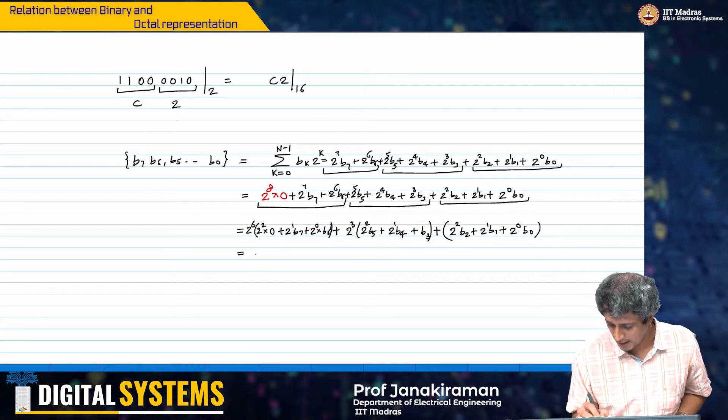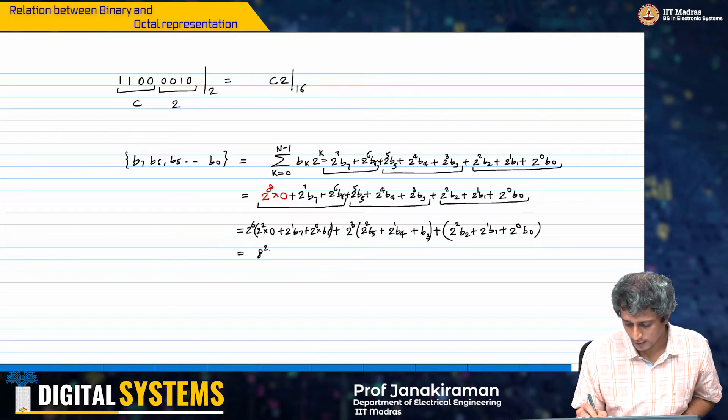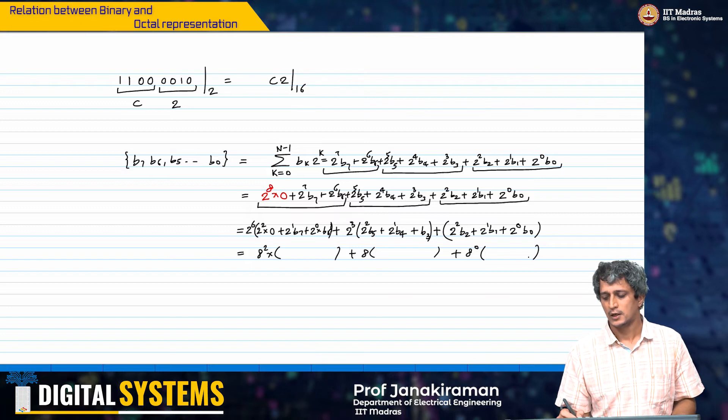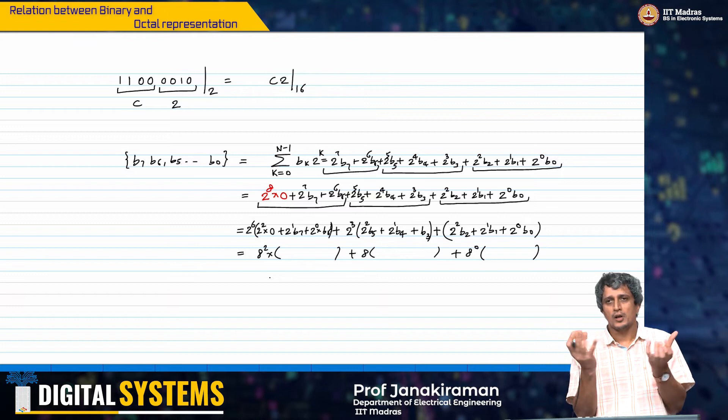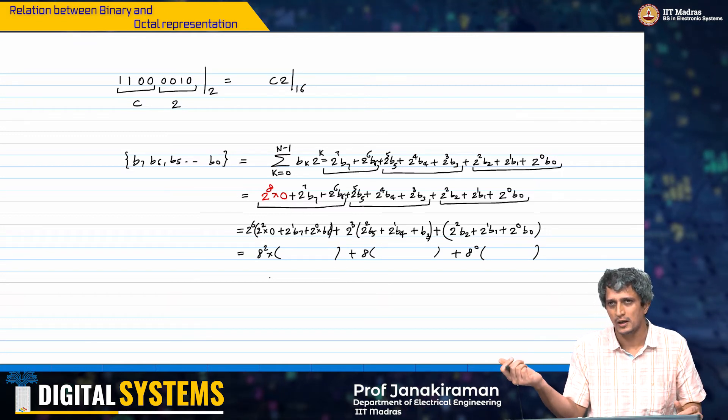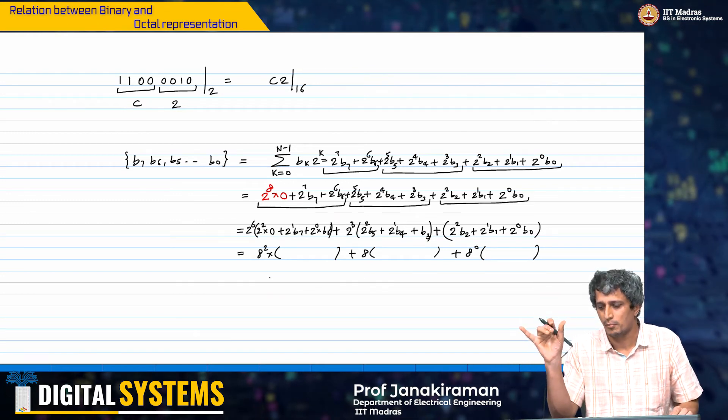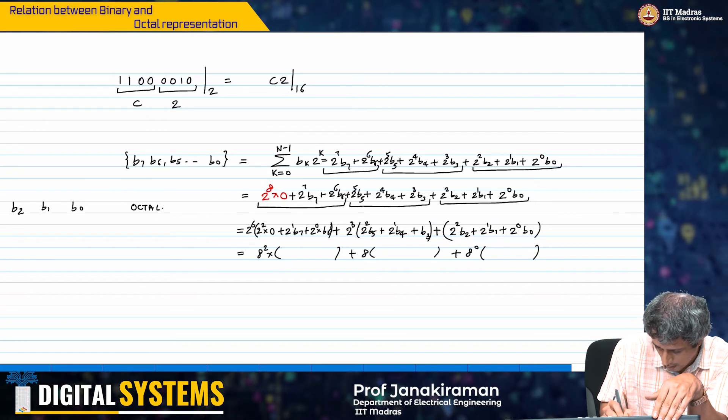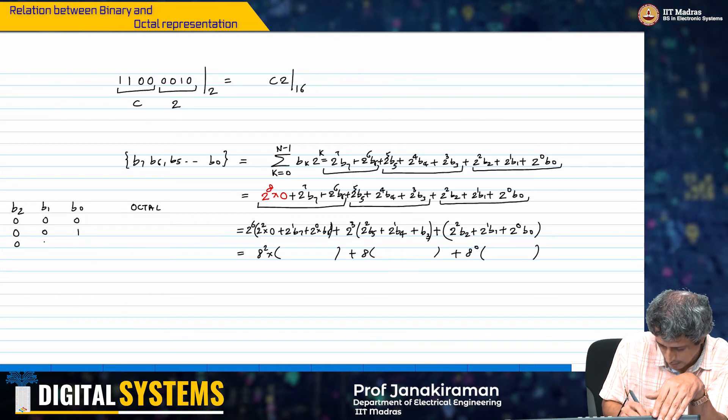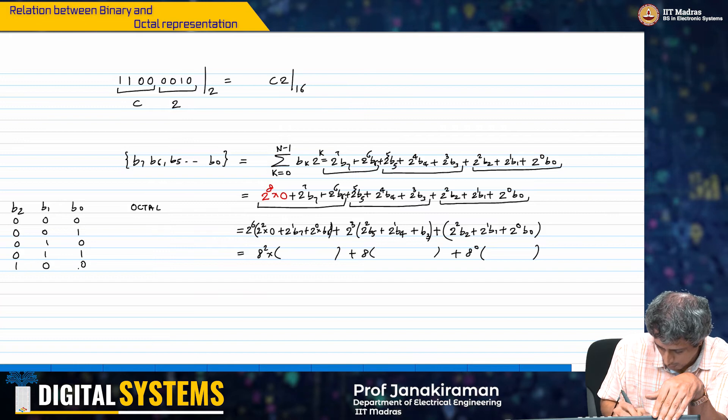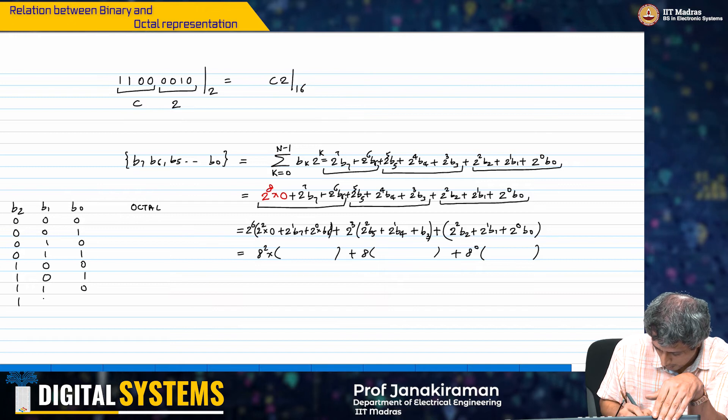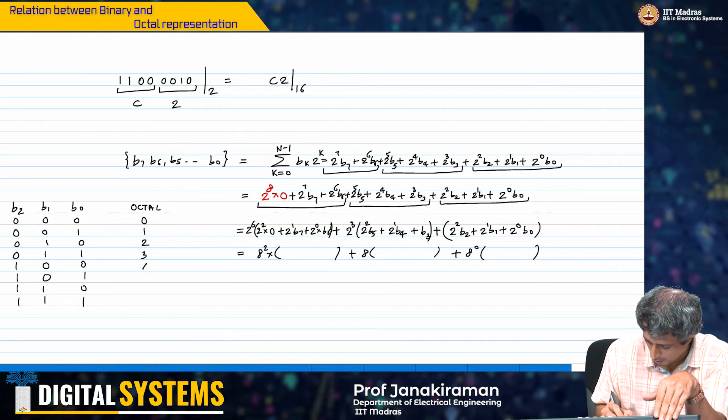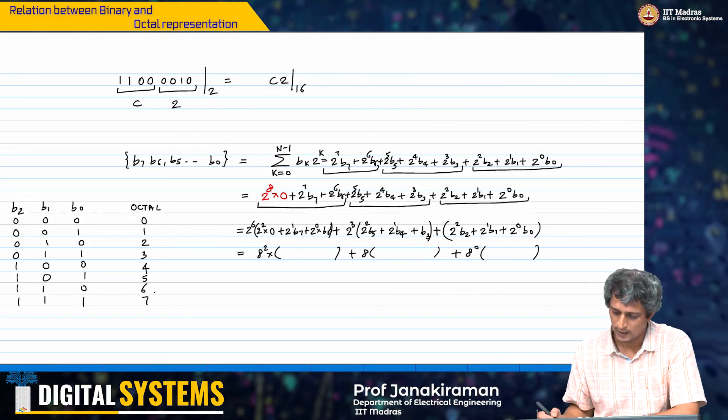Effectively this you can see is nothing but 64 which is 8 square into something plus 8 into something else plus 8 power 0 into something else. All you have to do is take the n bit binary number, group them in sets of 3 starting from the least significant bit and simply replace that binary number by the octal representation. Again you can make a table here: b2 b1 b0 octal value 0, 0 0 1, 0 1 0, 0 1 1, 1 0 0, 1 0 1, 1 1 0, 1 1 1 corresponding to 0 1 2 3 4 5 6 7. The octal values are 0 1 2 3 4 5 6 7 exactly the same as the decimal.